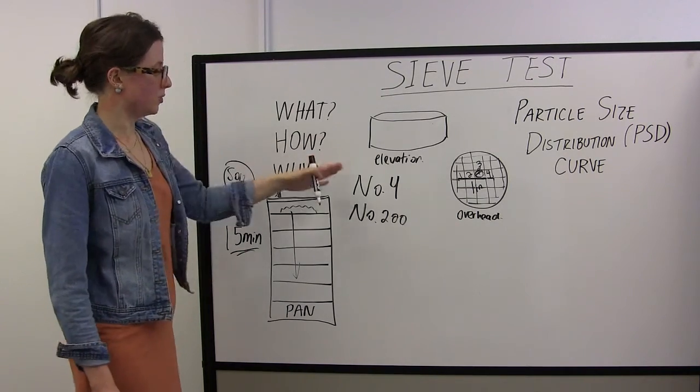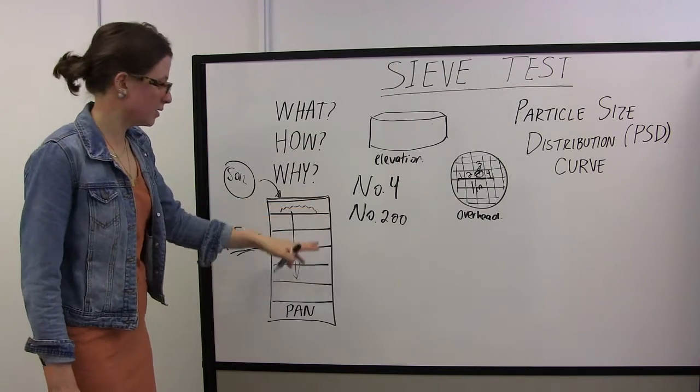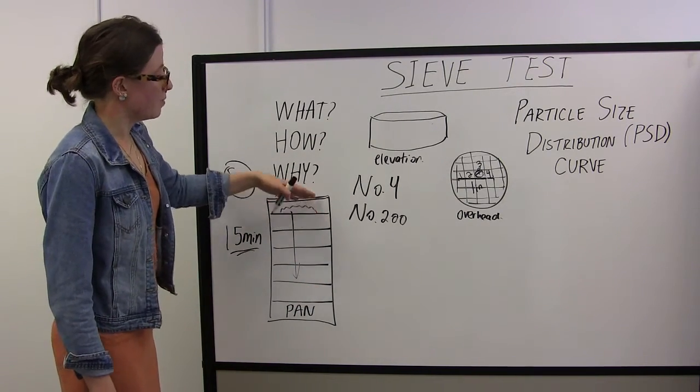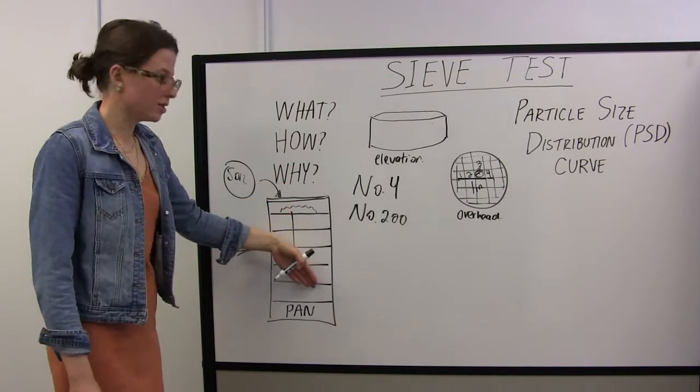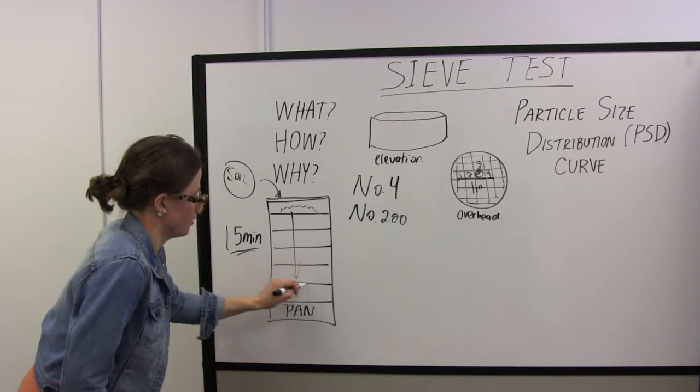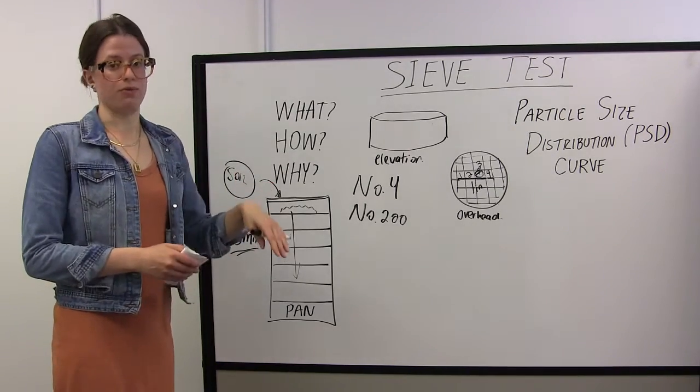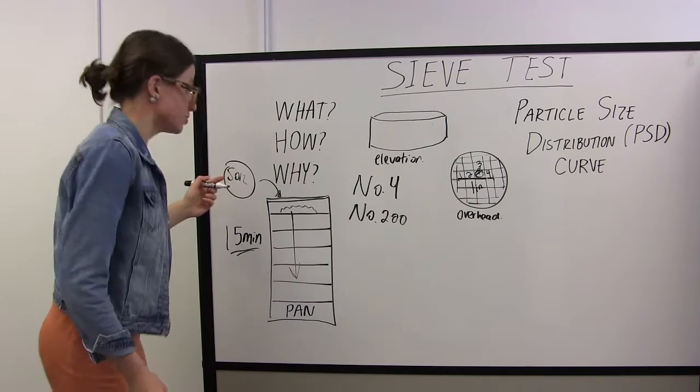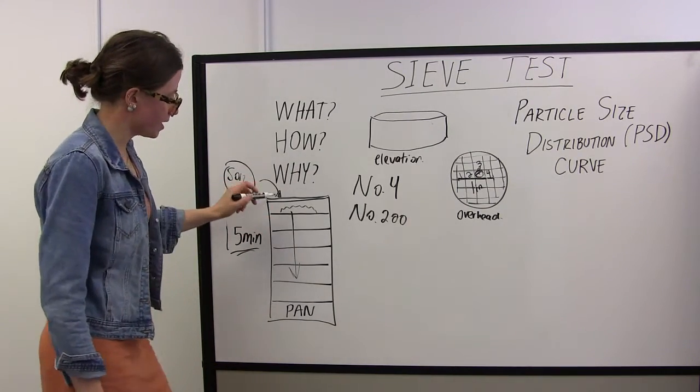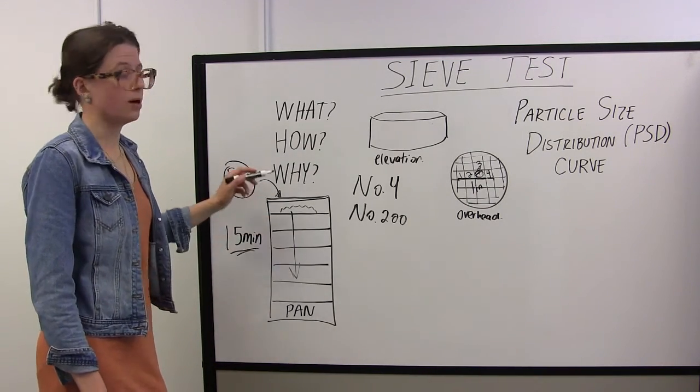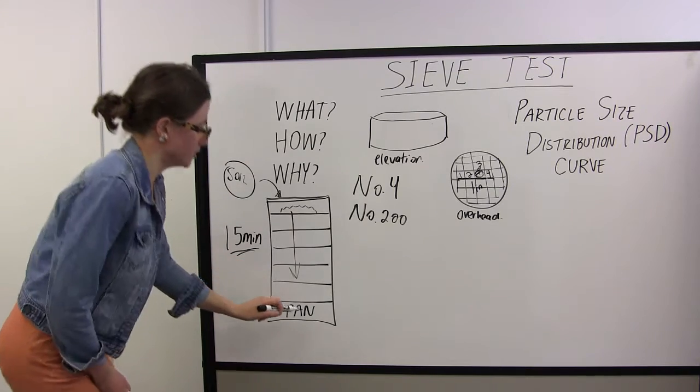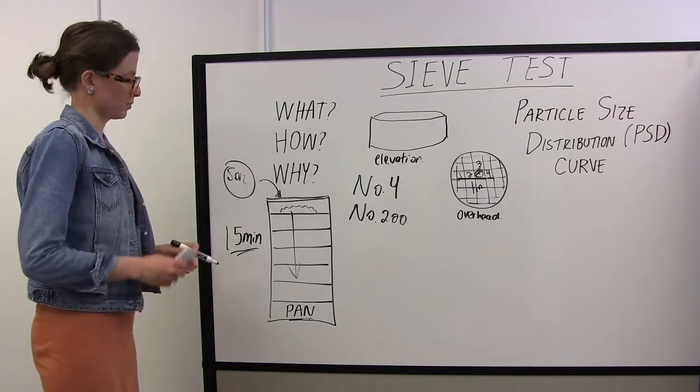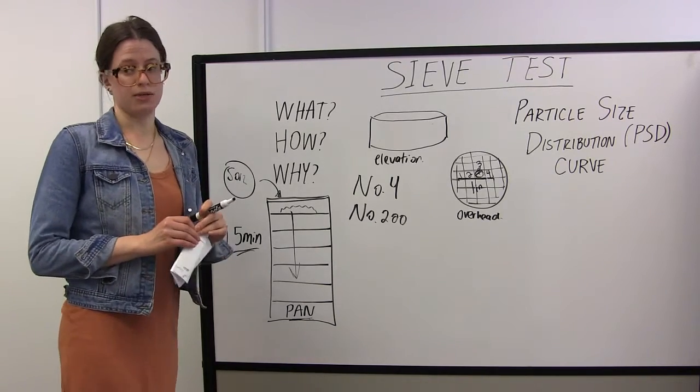Because if we think back to the ordering, coarse opening here, fine opening down here, really fine particles can make their way through these really coarse sieves until they get to a sieve size that they are larger than, so they cannot fit through the mesh opening sizes. There are some soil particles that may pass through all of your sieve openings, so they're smaller than all of your sieves here, which is why we have this pan to collect those materials.